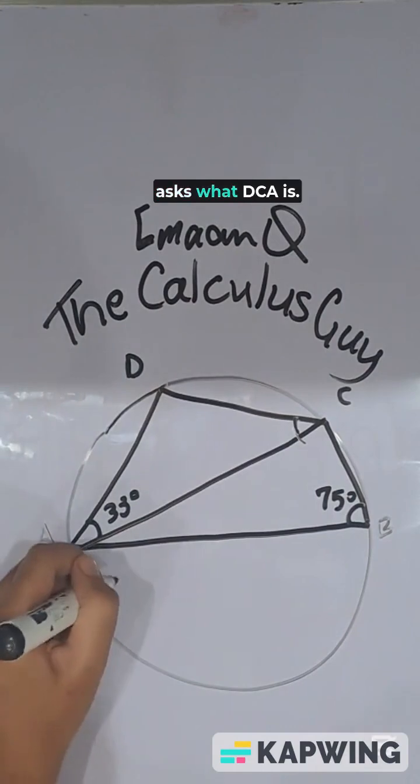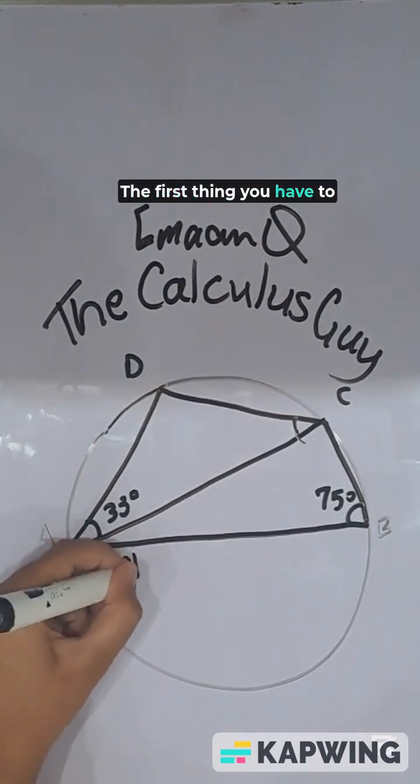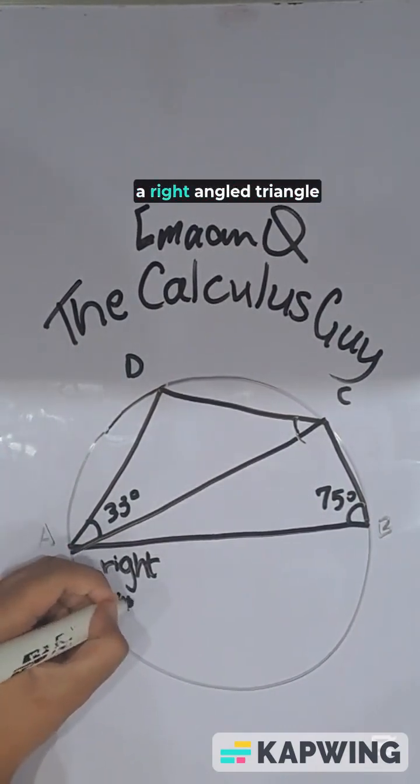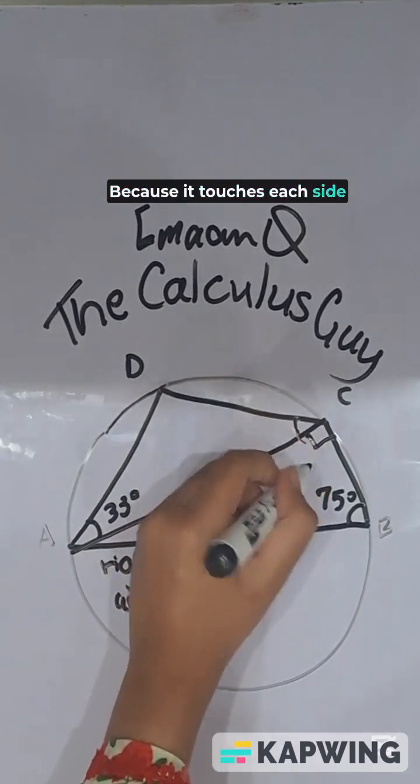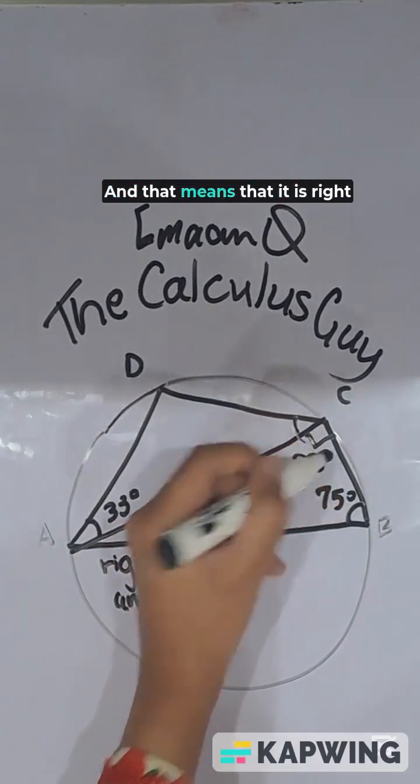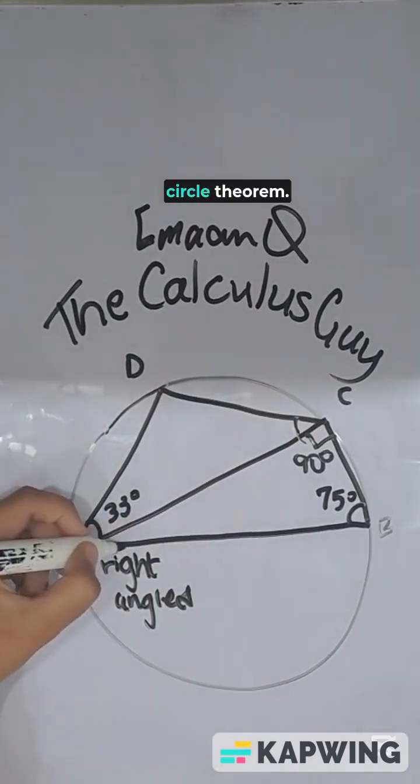So basically this question asks what DCA is. But the first thing you have to notice is that triangle ACB is a right angled triangle in a semicircle. Why is it right angled? Because it touches each side of the semicircle and that means that it is a right angle because of the circle theorem.